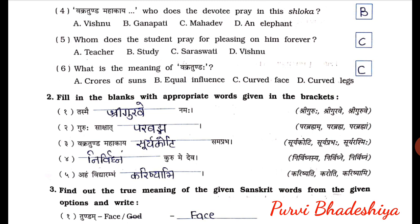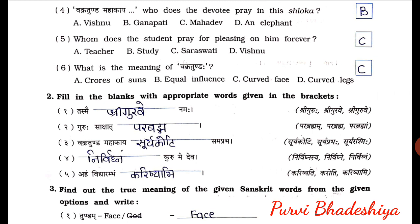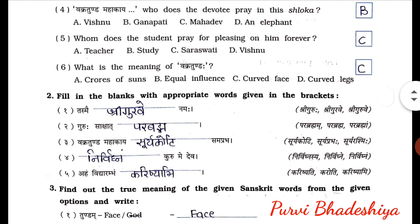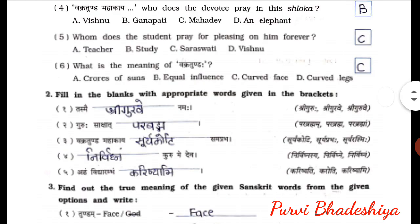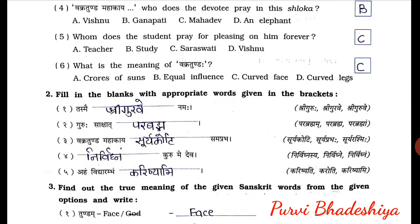Fifth number: whom does the student pray for pleasing on him forever? The answer is C — Saraswati. Sixth one: what is the meaning of Vakratundah? The correct answer is C — Curved Face.